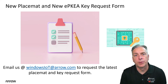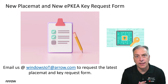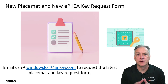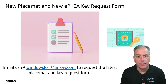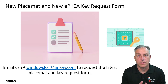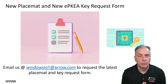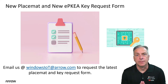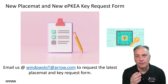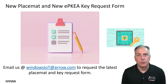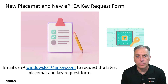Next, there is a brand new processor placemat and a brand new ePKEA — embedded product key entry activation — key request form. When Microsoft releases a new product like Windows 11 LTSC, they release a new key request form so you can request the real key to get 50,000 activations, and a new processor placemat to help determine which processors qualify for each price point and license tier. Both were recently updated and you can obtain them from Arrow — reach out and we can assist you.